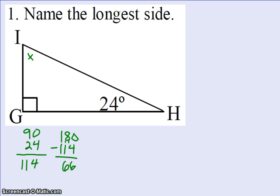So I know that this angle I right here is 66. So to name the longest side, I look at the angles. 90 is my biggest angle, so that will give me my longest side. 24 is my shortest angle, so the side opposite that will give me my shortest side. And 66 is my medium or middle angle, so that will give me my medium side. So the answer to this problem to name the longest side will be side IH or HI.